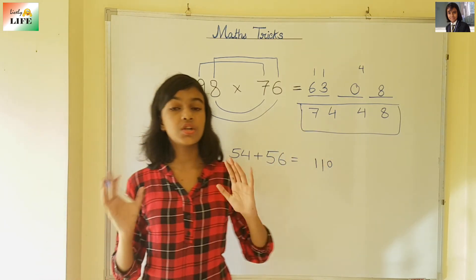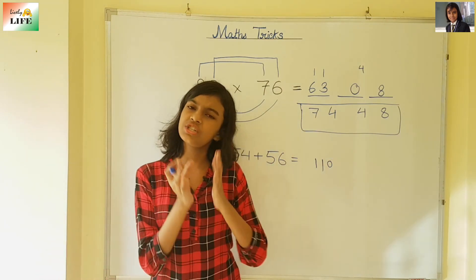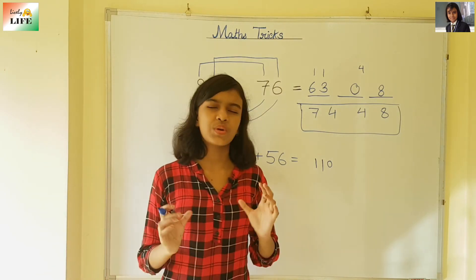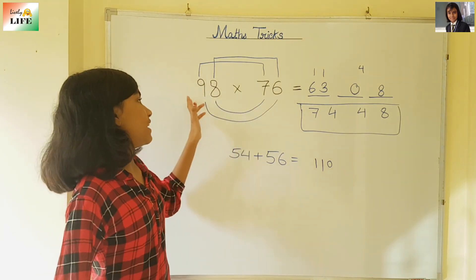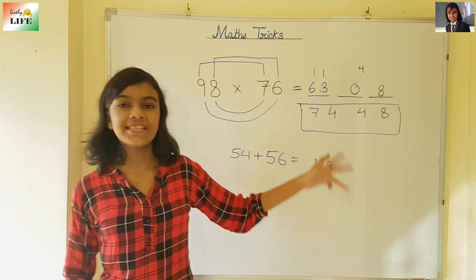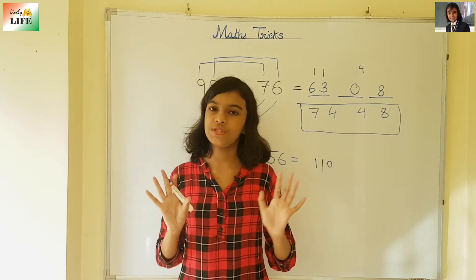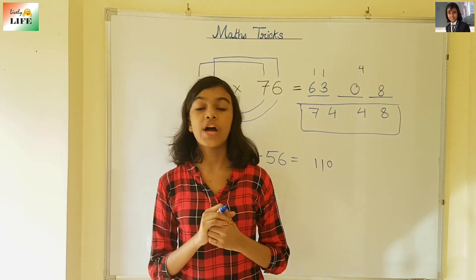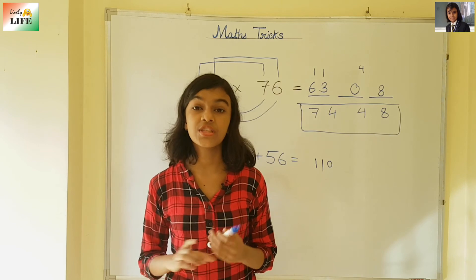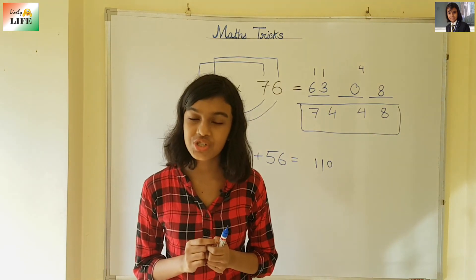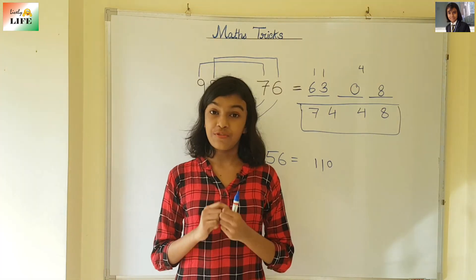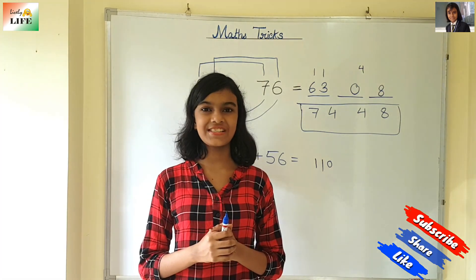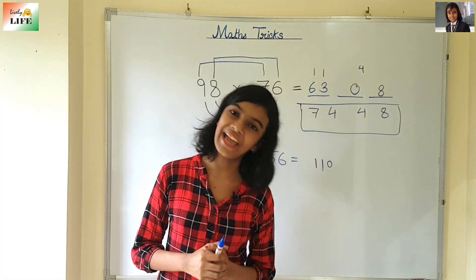So, if we would do this in the normal way, it would take such a long time. But with the help of this trick, you can do it in a very short time. 98 into 76 is 7,448. So, this was for today. In the next video, I am going to be back with a 3-digit multiplication trick. If you like this video, then click on the like button and stay with me. Please click on the subscribe button. Thank you.